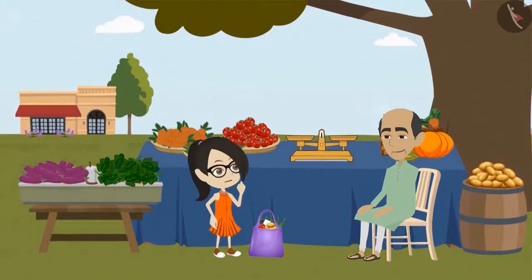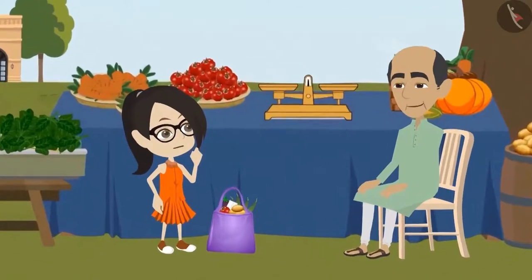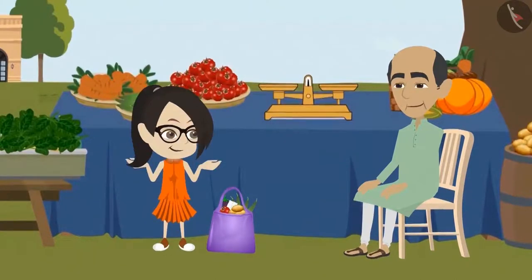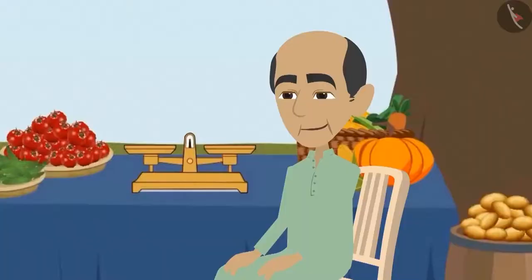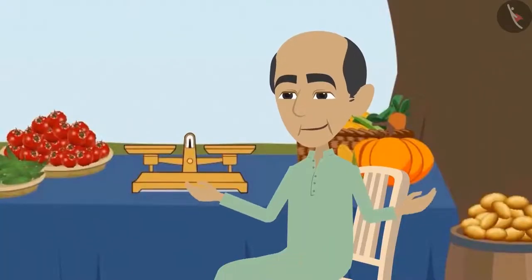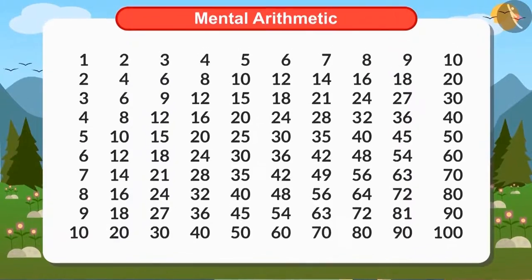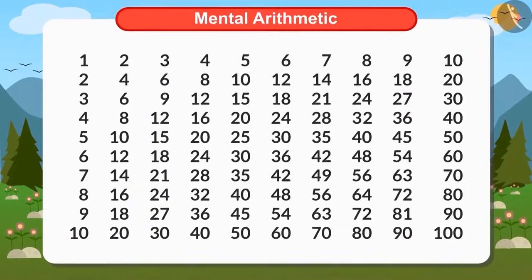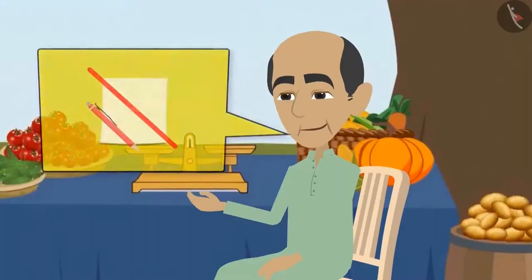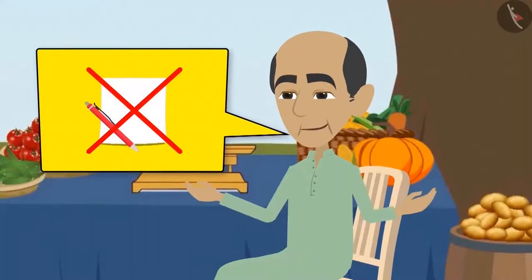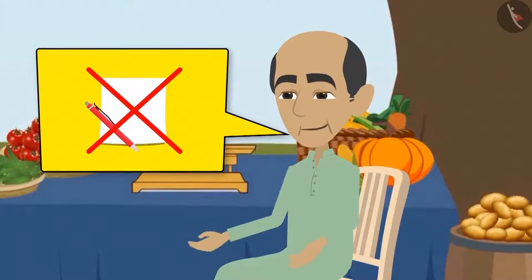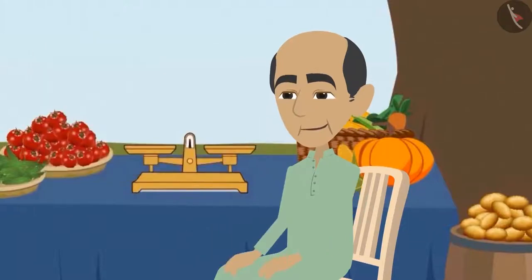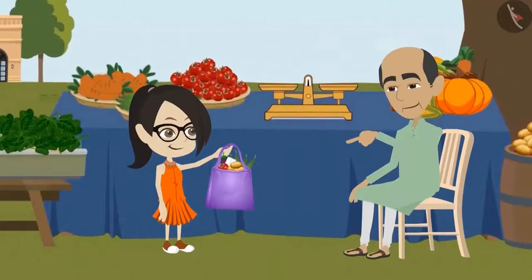Vandana is surprised to see the vegetable seller calculating so quickly. She asks, 'Uncle, how did you calculate so quickly without any paper and pen?' The vegetable uncle tells Vandana that if she learns the tables well, she can also find the total value of these vegetables very easily without using paper and pen.